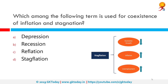Which among the following terms is used for the coexistence of inflation and stagnation? The correct answer is Stagflation. Stagflation is a condition of slow economic growth and relatively high unemployment or economic stagnation, accompanied by rising prices or inflation. It can also be defined as inflation combined with a decline in gross domestic product.